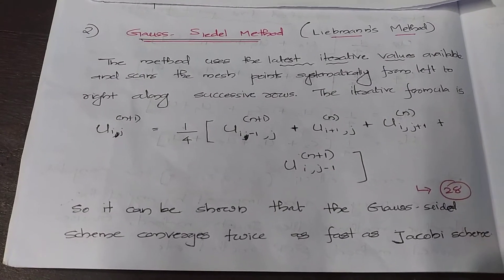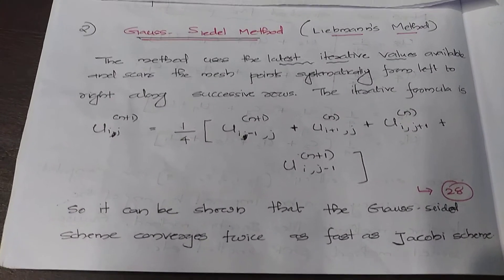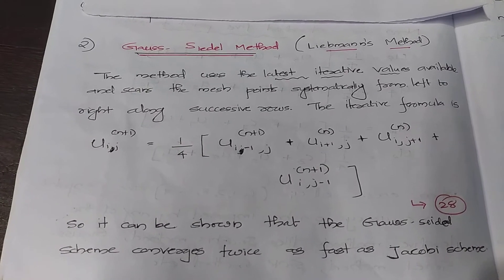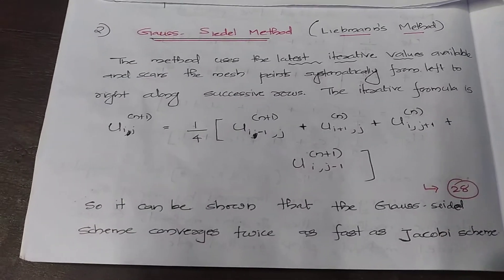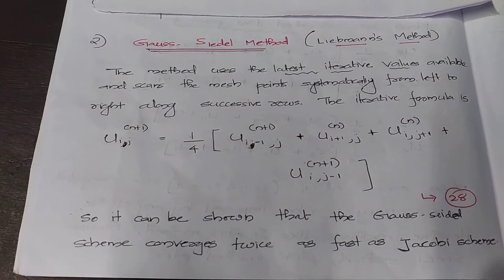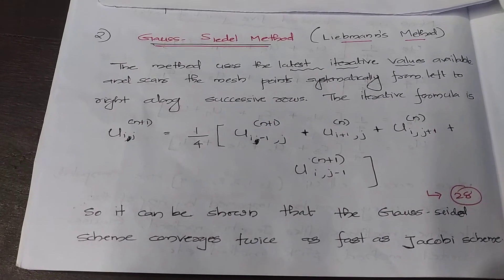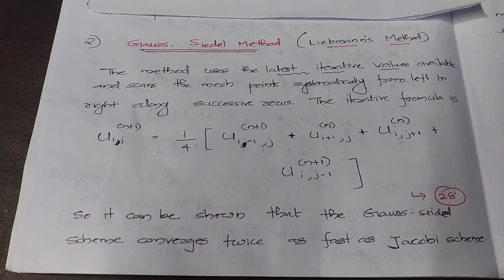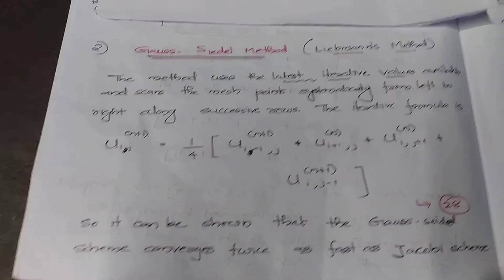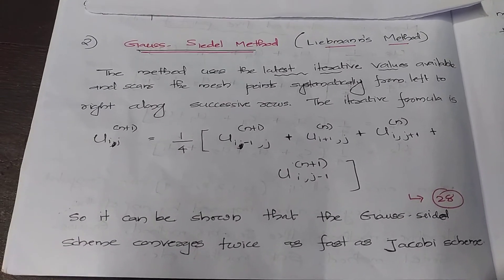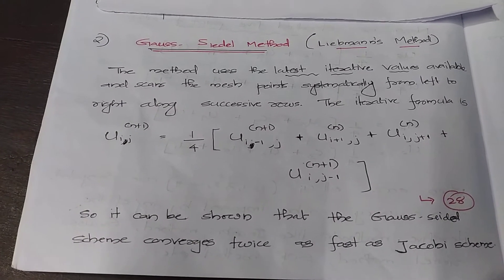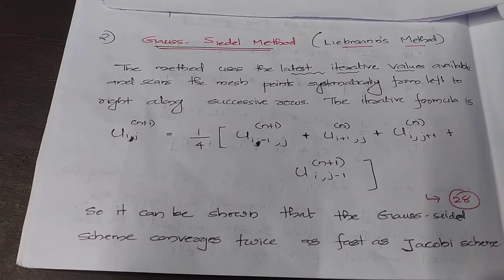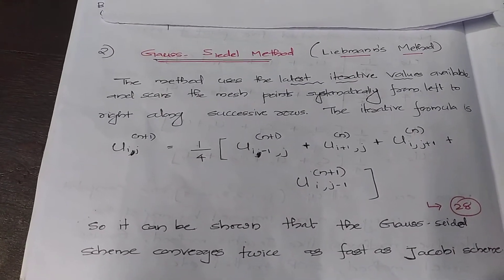The next iterative method is the Gauss-Seidel method, also called Liebmann's method. It is more accurate than the Jacobi method and converges twice as fast. In this method, the latest iterative values are used as soon as they become available, scanning mesh points systematically from left to right along successive rows. The formula is u(i,j)^(n+1) = (1/4)[u(i-1,j)^(n+1) + u(i+1,j)^n + u(i,j+1)^n + u(i,j-1)^(n+1)], equation number 28.